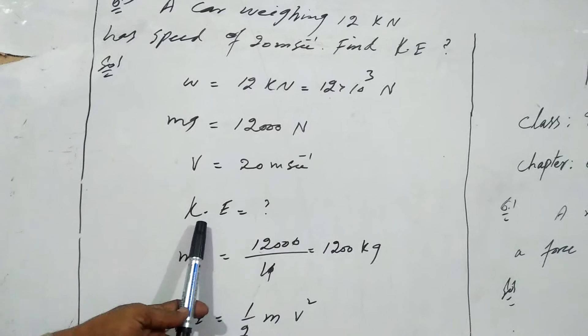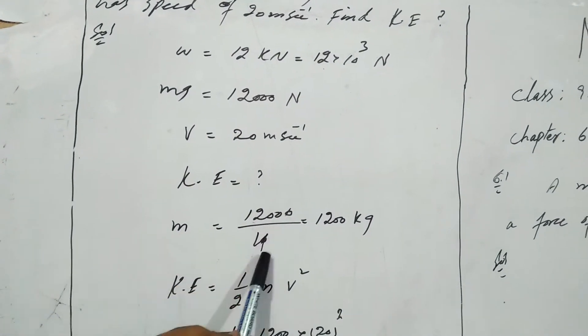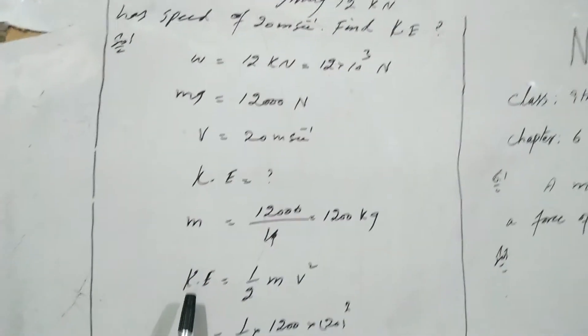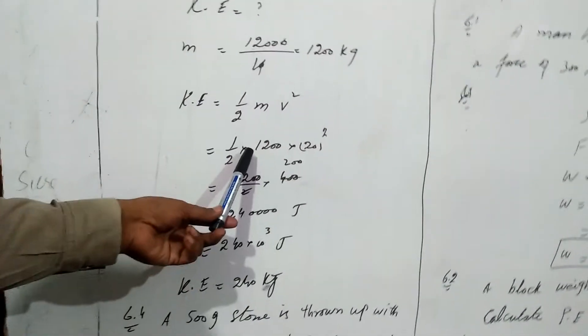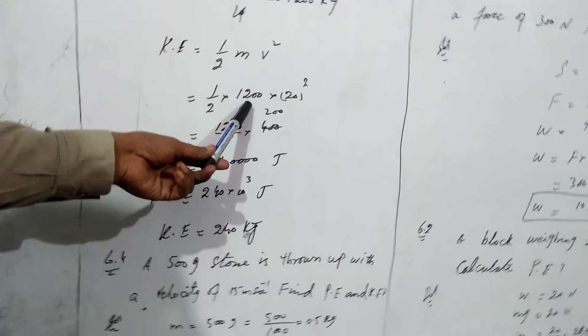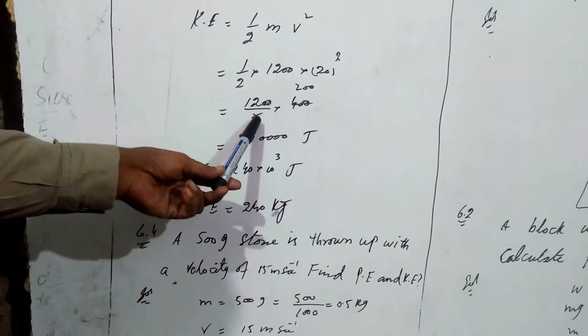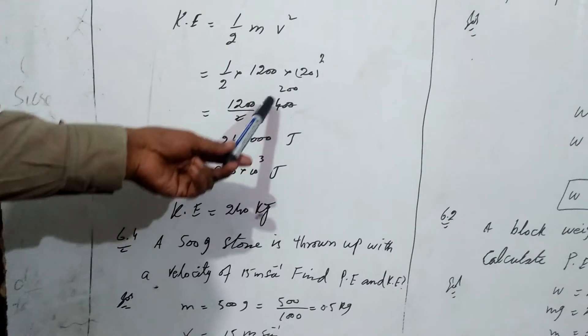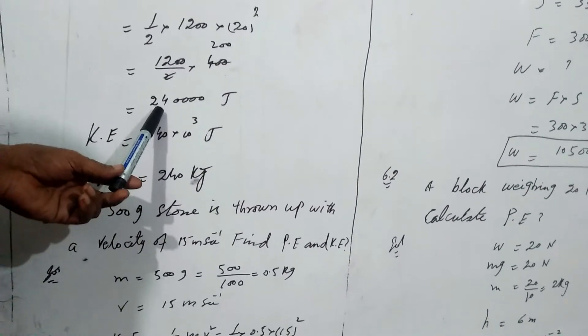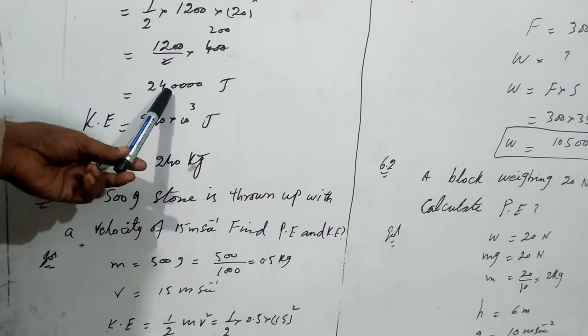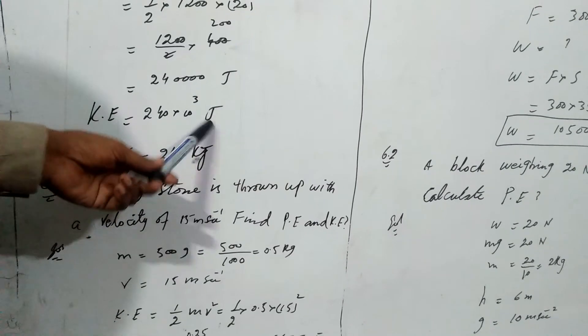Kinetic energy we have to find. So m equals 12,000 divided by 10, which is equal to 1,200 kg. So formula of kinetic energy: half mv squared. Half m equals 1,200, v equals 20 squared, which is 400. By canceling with 2, we have 200. So 1,200 times 200, we have 240,000 joules, which is equal to 240 kilojoules. Kinetic energy is equal to 240 kilojoules, as 10 to the power 3 is equal to kilo.